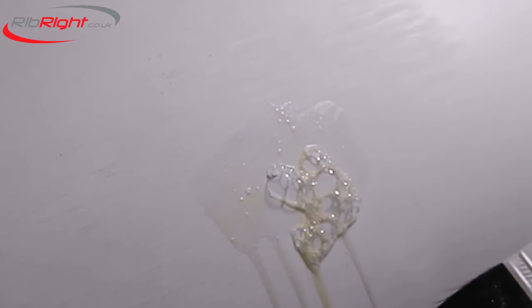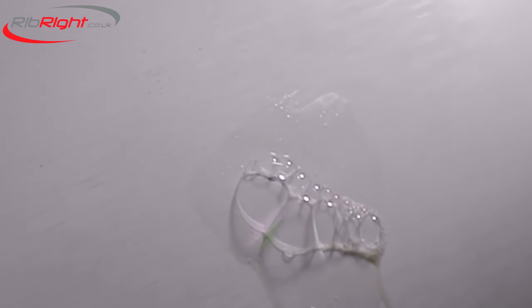First, you will need to locate your leak. Inflate your boat and use soapy water to identify the problem area. Once found, mark the repair and deflate your inflatable.